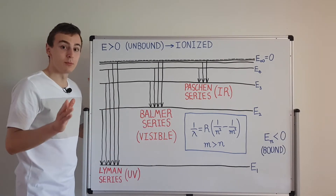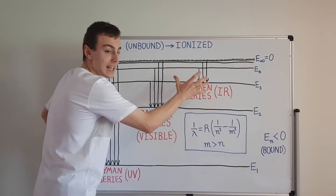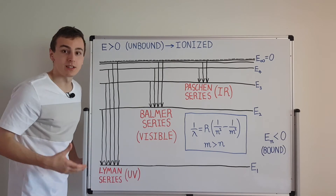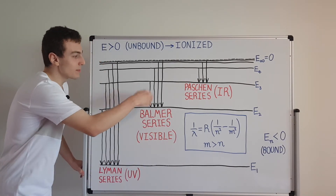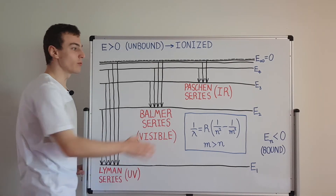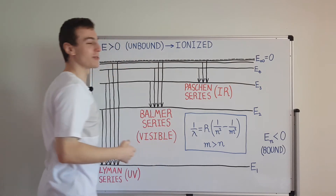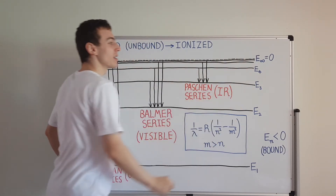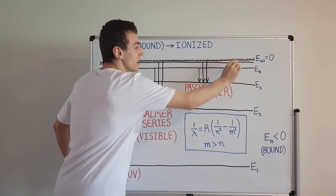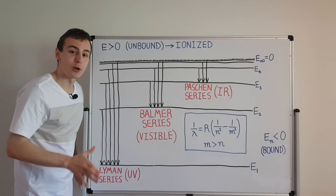The Lyman series and Paschen series are not in the visible spectrum — they are in ultraviolet and infrared respectively. The Balmer series is actually the only one you can see with the naked eye; many of its members are between 400 and 700 nanometers, which is the visible spectrum. Beyond the Paschen series we get the Brackett series and the Pfund series, and there's an infinite number of possible series, but they have really tiny energies in the far infrared region that you cannot see with the naked eye.